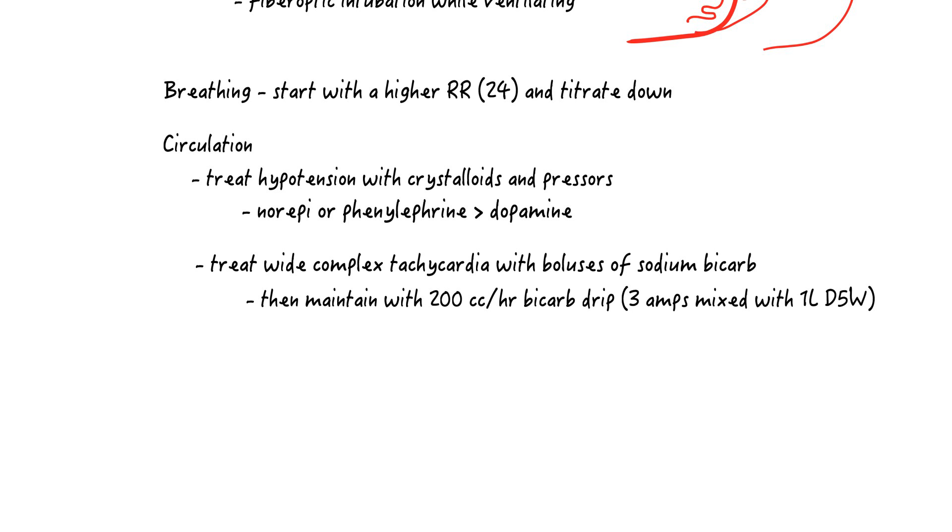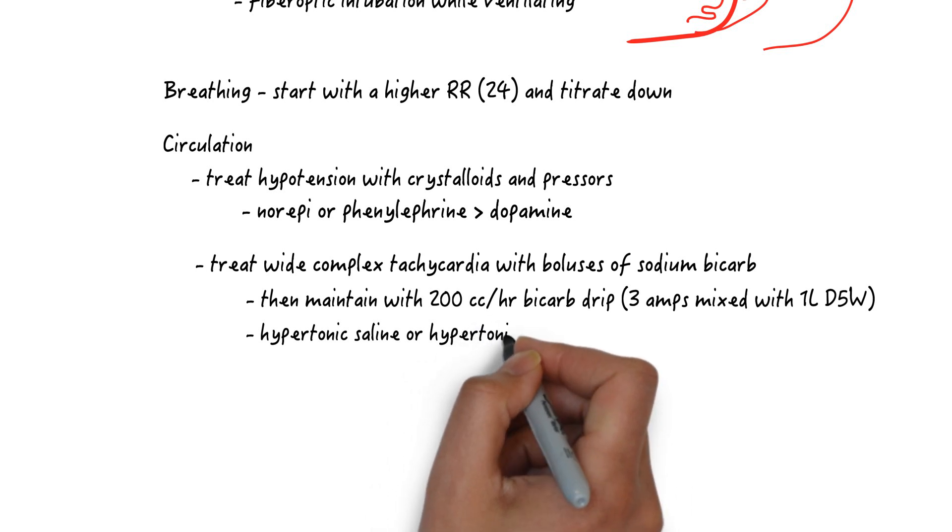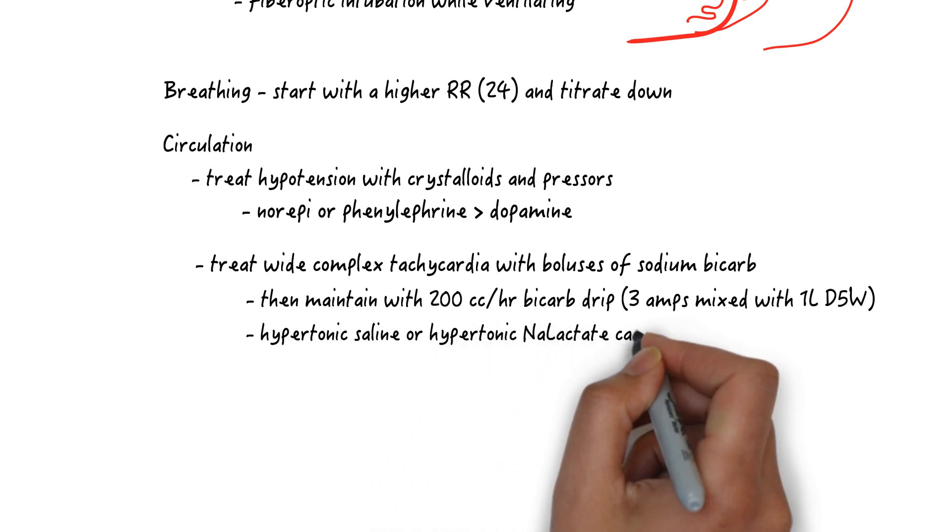If the pH is above 7.55, consider first lowering the respiratory rate to eliminate respiratory alkalosis. If this fails, use hypertonic saline or hypertonic sodium lactate for the sodium load.